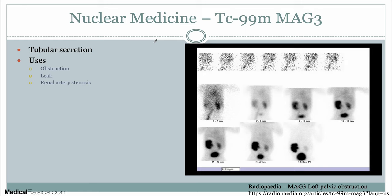Next we're going to talk about nuclear medicine. There are three major types of nuclear medicine studies: MAG-3, DTPA, and DMSA. MAG-3 is used when you want to evaluate the collecting system — things like obstruction, leak, or renal artery stenosis if you gave Lasix — because it's a tubular secreting agent, unlike the others. That means you can really get a good evaluation of the collecting system.